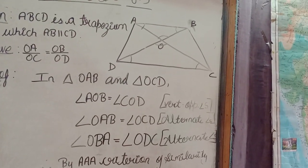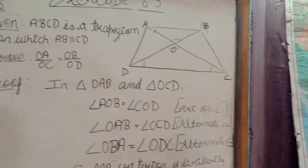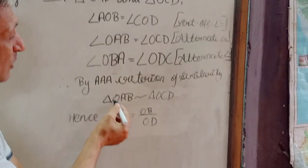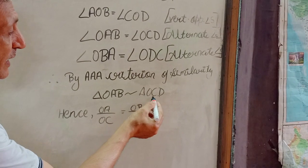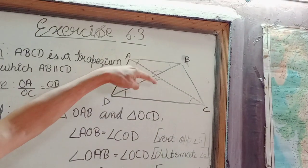Therefore, by AAA similarity criterion, we have triangle OAB similar to triangle OCD.